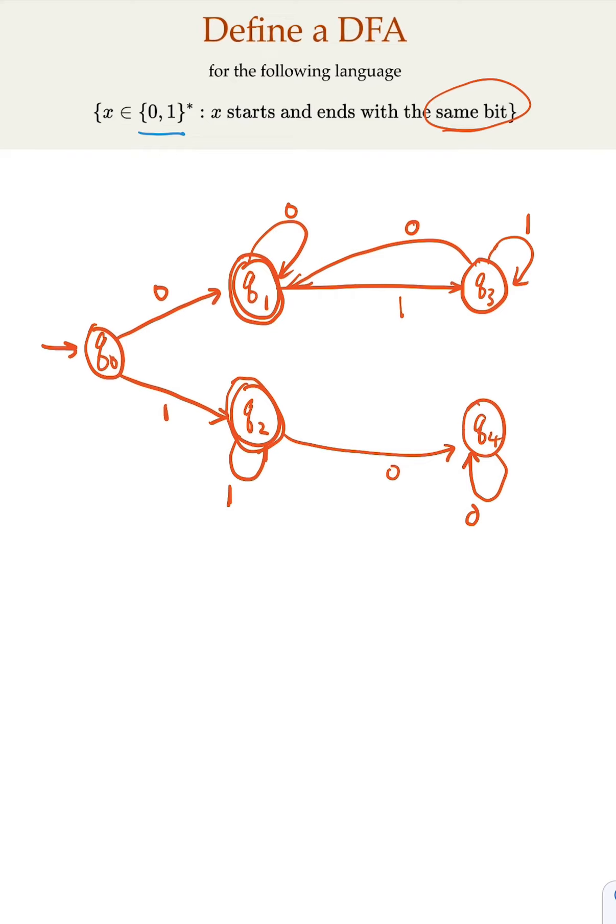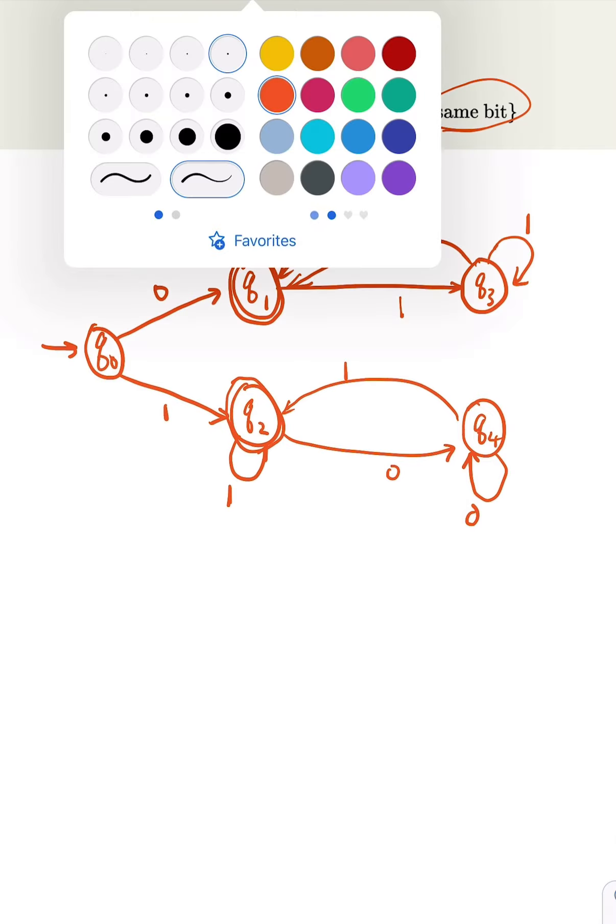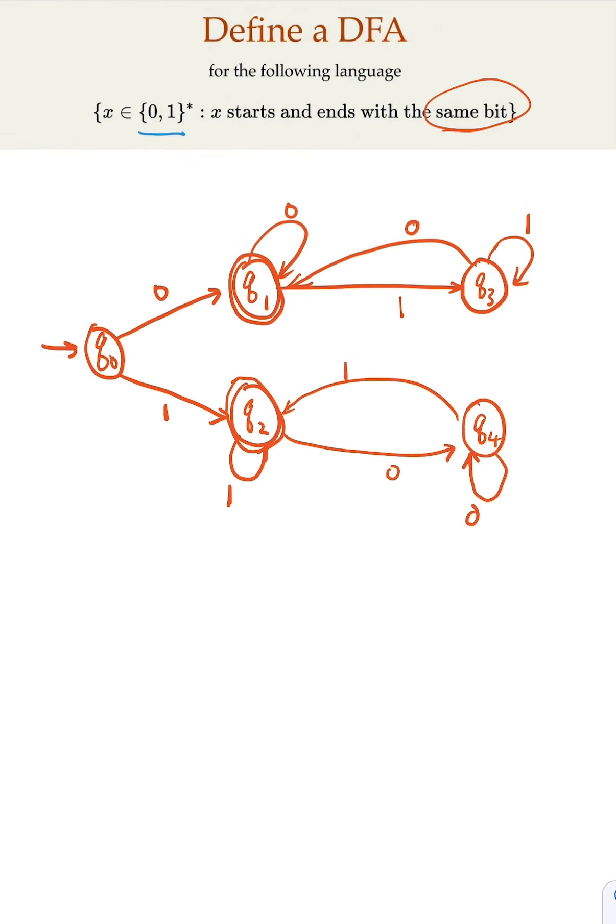Here, if you get 1, you're going to go back to the accepting state. Because it starts and ends with 1, alright? So the two accepting states here are going to be this one and this one. That's the DFA for the language.